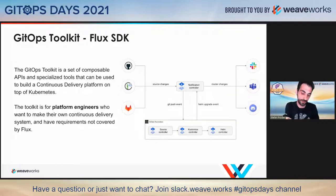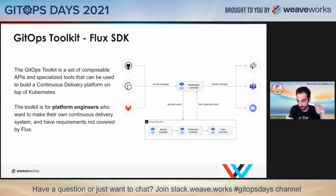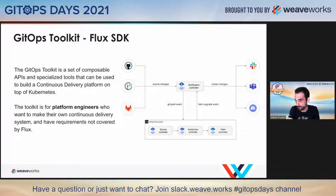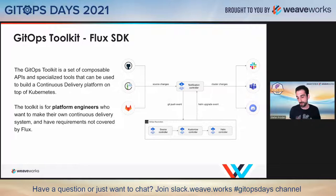Flux has evolved over time. The current Flux version is built on top of an SDK that we call the GitOps toolkit. This toolkit is made out of Kubernetes APIs, Kubernetes API extensions called custom resource definitions, and specialized tools which are Kubernetes controllers. Flux is an automated way of how you bundle these controllers and these API capabilities and make them work together.